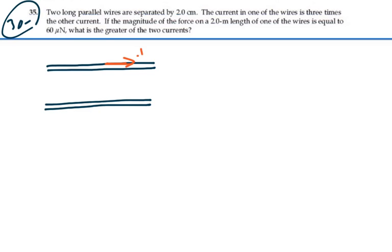So let's just have one current go in this direction and the other current, let's call this I₁ equal to I, and the other current is I₂ equal to 3I.